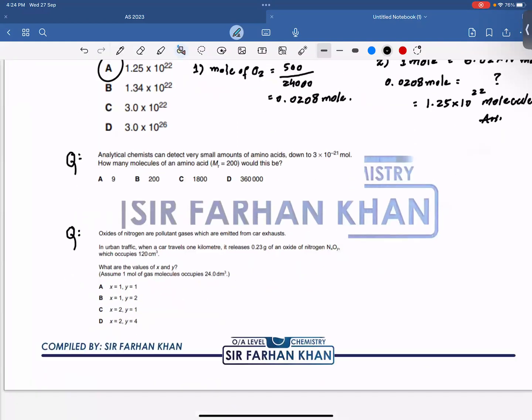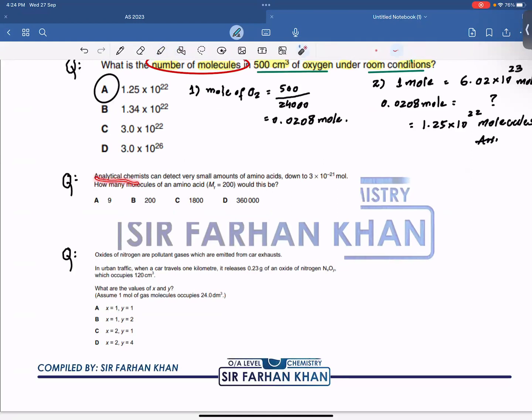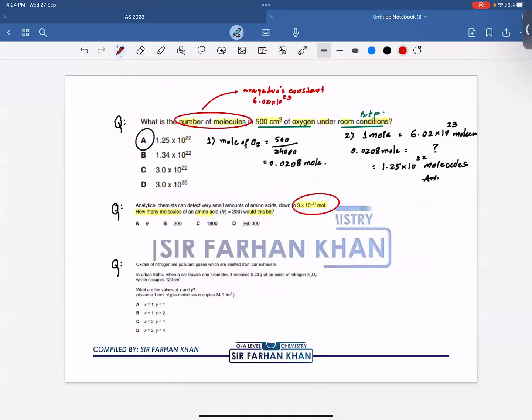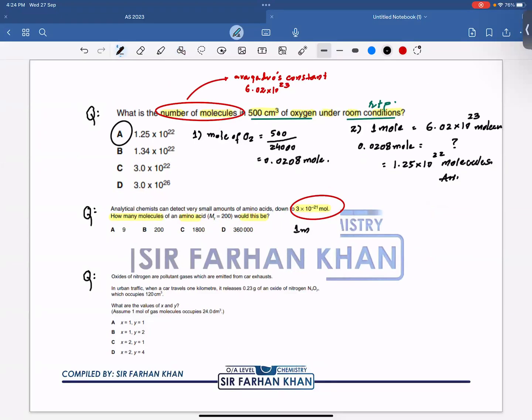Now in the second question, analytical chemists can detect very small amounts of amino acid, down to 3 times 10 to the power of minus 21 moles. How many molecules of amino acid would this be? So I basically, examiner has moles already provided. So I don't have to calculate moles. I will use direct formula, direct concept.